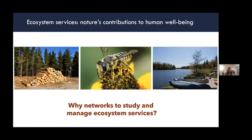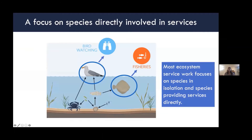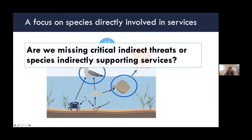The reason I chose this as an example is that I think networks provide new insights into how to study and manage ecosystem services. Most work on ecosystem services to date focuses on species that directly provide services, like single-species management in fisheries or bird watching focusing on a set of birds in a particular place. This could potentially miss species that play indirect roles in services, or threats that are ignored by focusing only on a particular group. So we use networks to ask: are we missing critical indirect threats to services, or ignoring species that are indirectly supporting services through their interactions?